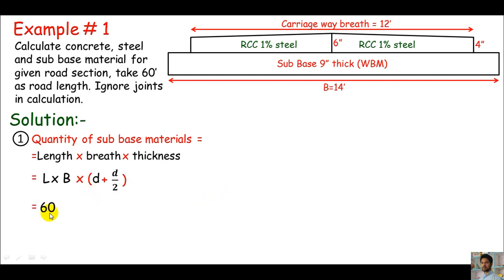Plugging in this equation, we get 60 times 14 times 0.75, which is the thickness of the sub-base in feet (9 inch), plus half of this thickness, 0.75/2. After doing the mathematics, you'll get sub-base material equals 945 CFT. This was our first approach.